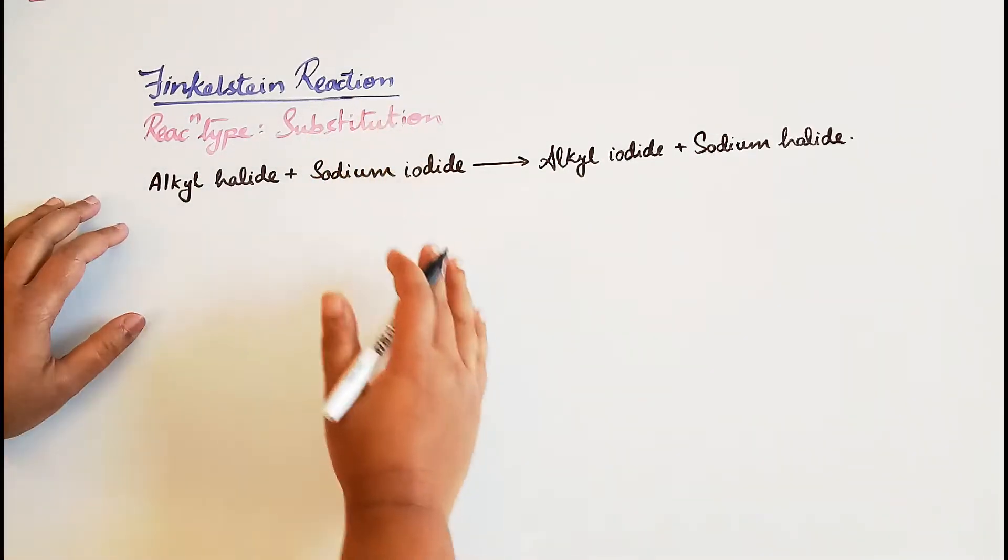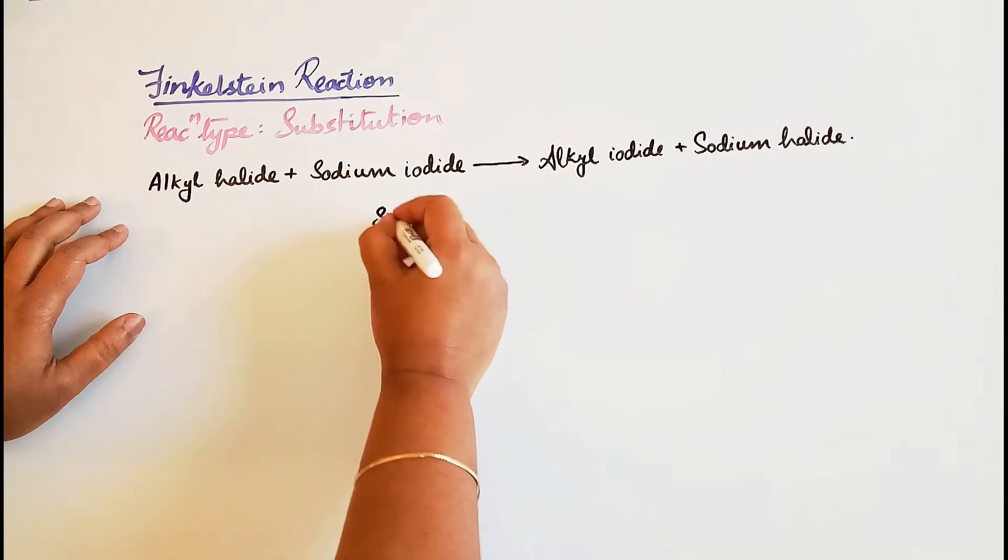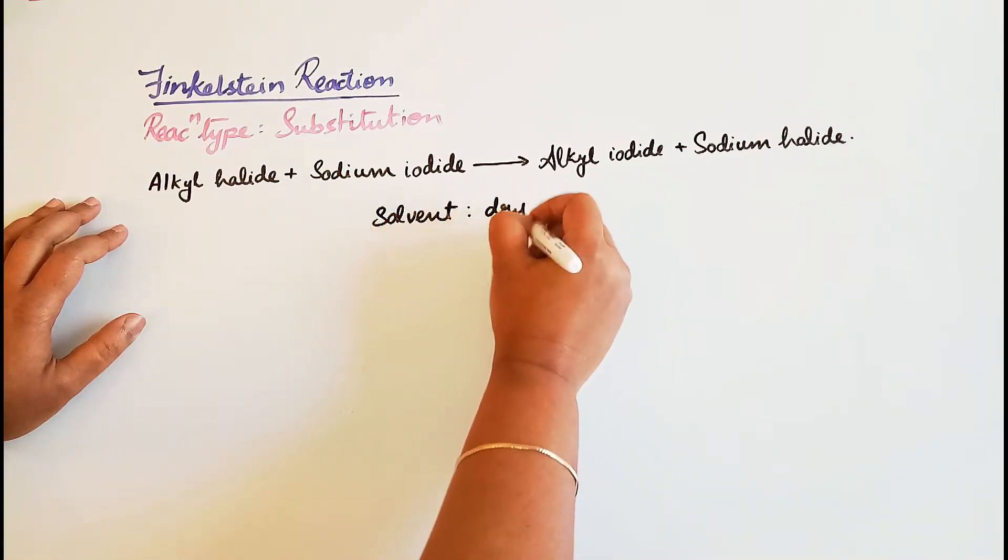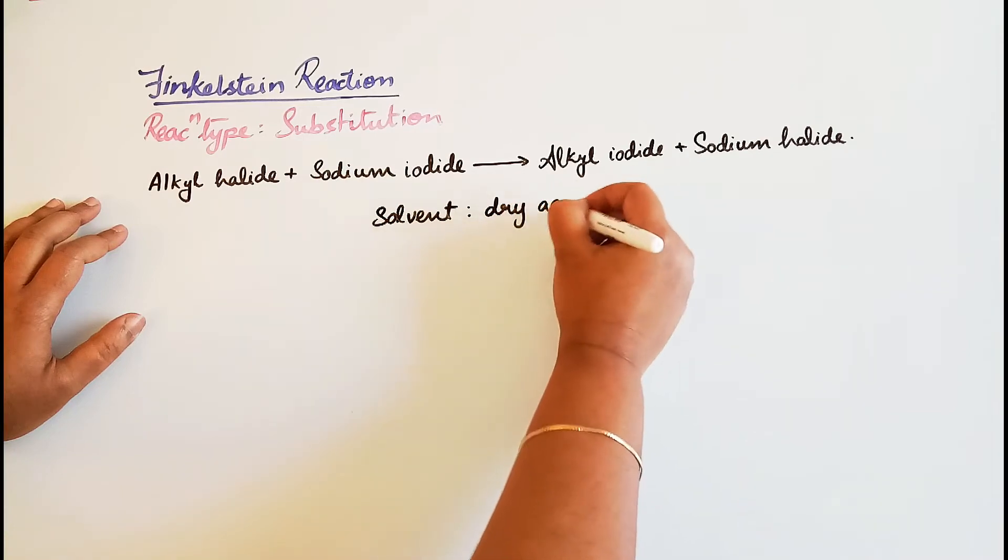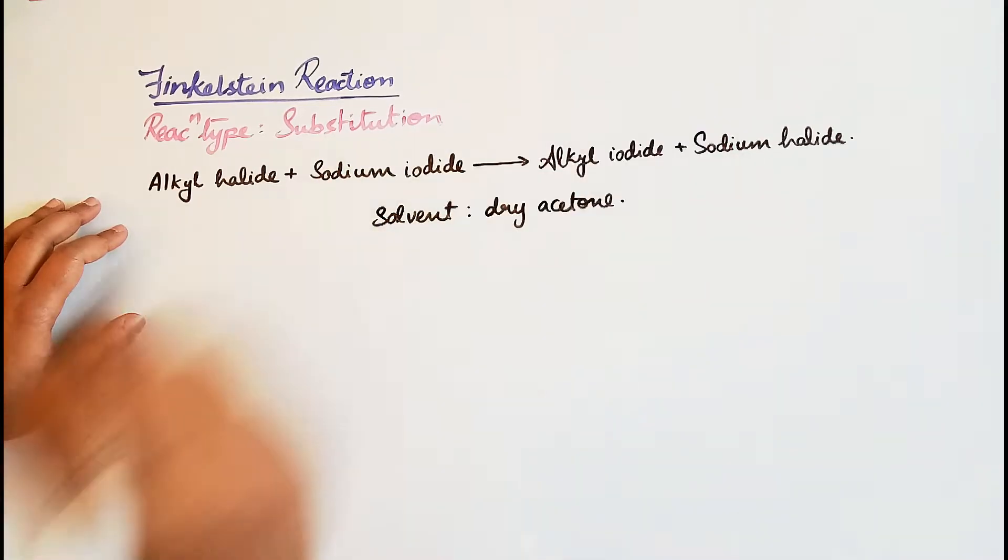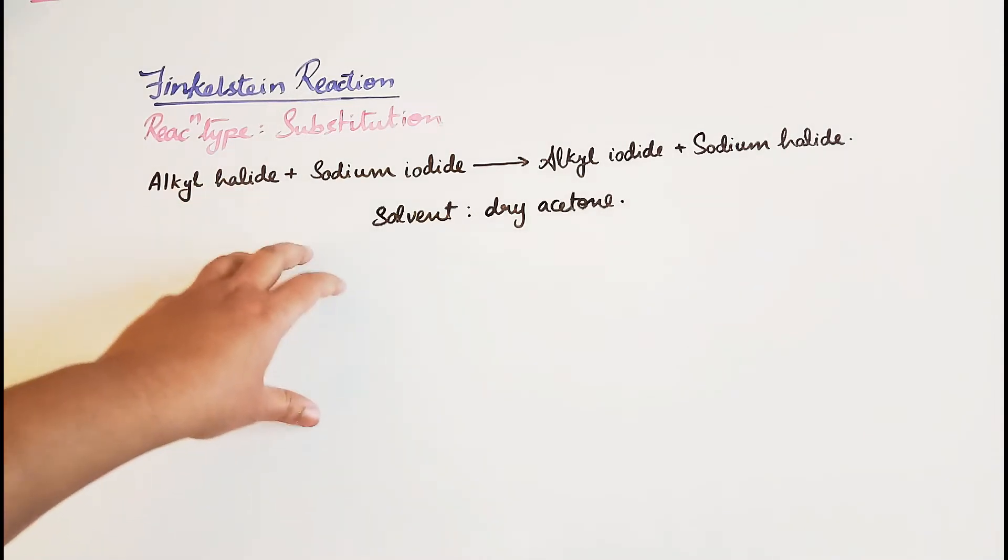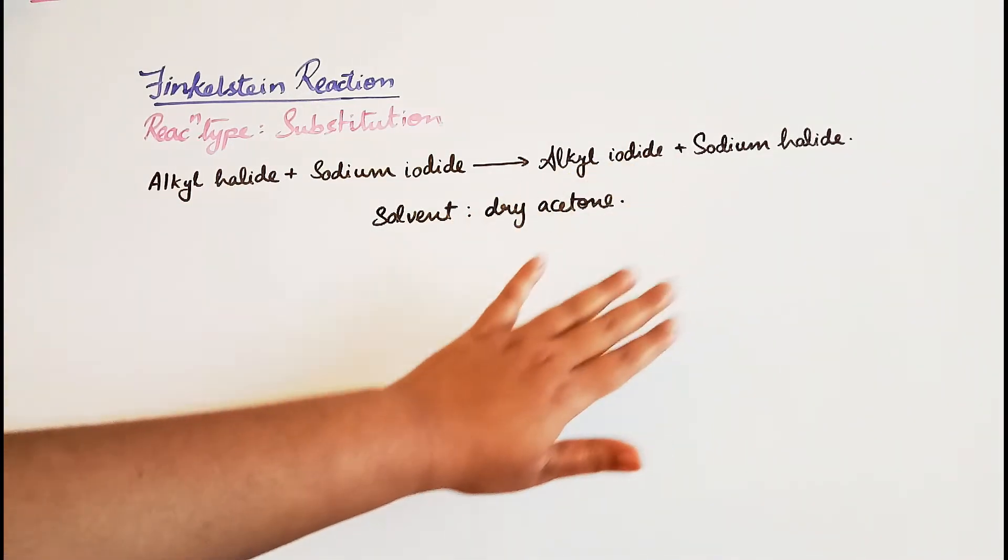The solvent used is dry acetone. An alkyl halide reacts with sodium iodide in dry acetone to form alkyl iodide and sodium halide.